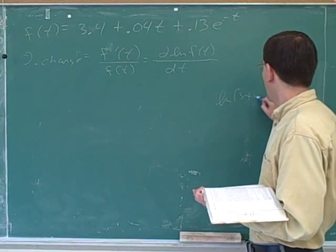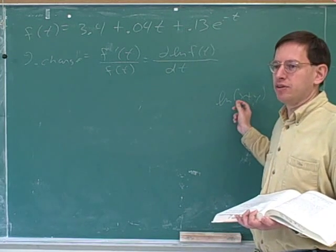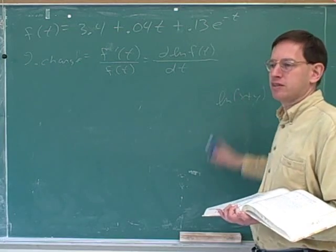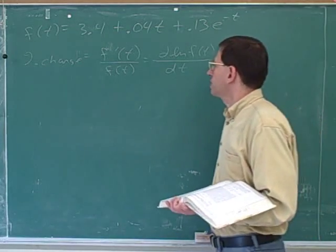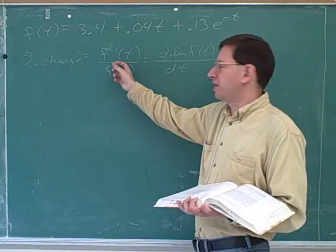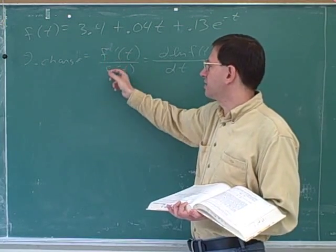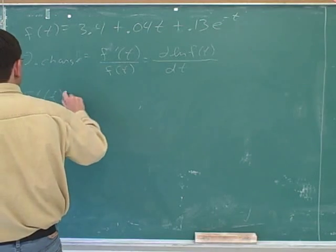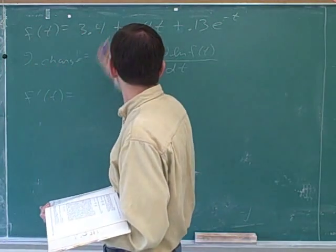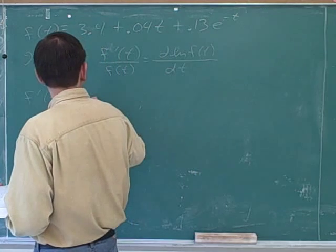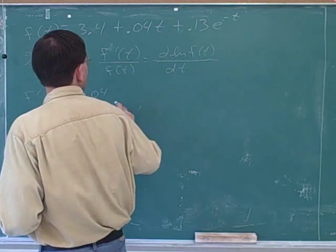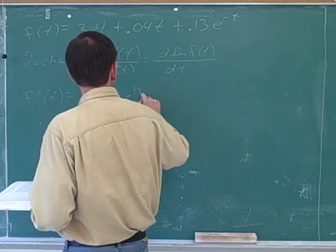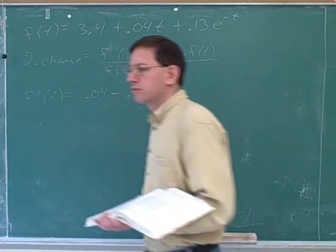So in this case, we can just use our basic formula for figuring a percentage change, and find the derivative and put it over the level. So what would be the derivative of this function? 0.04 minus 0.13 e to the negative t. Okay.